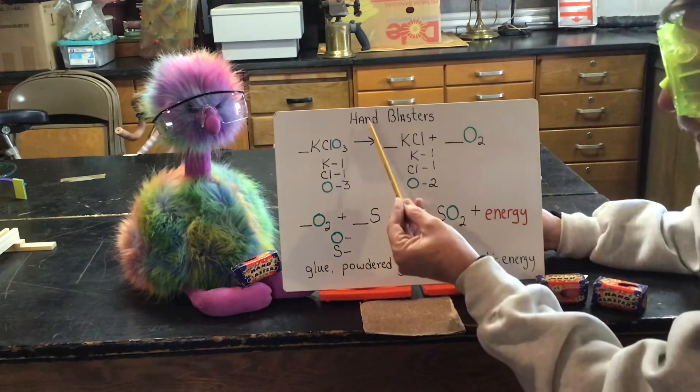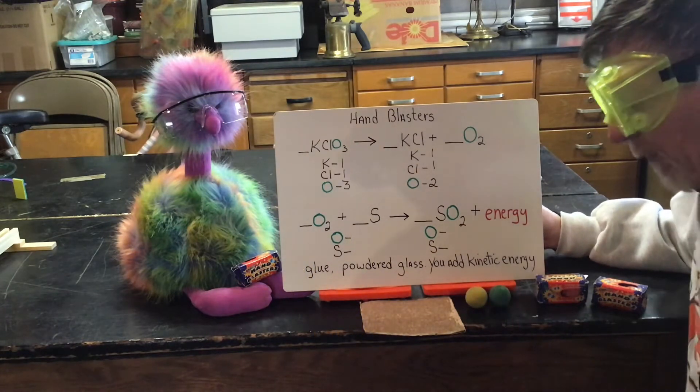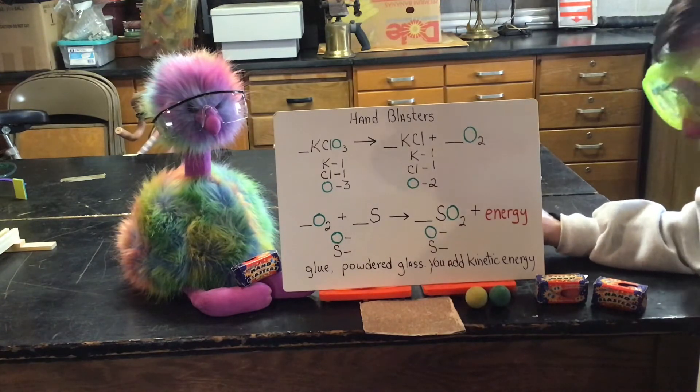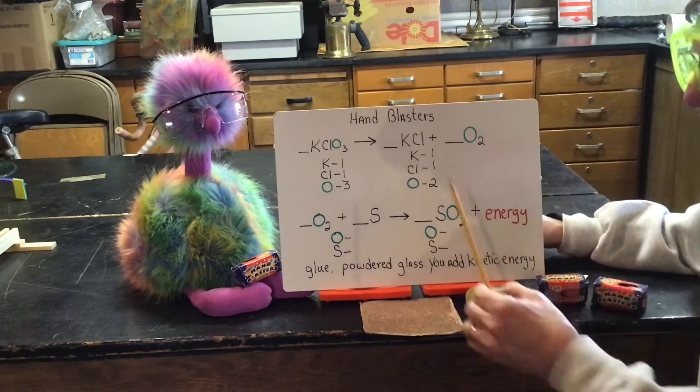And today, Bob and I are going to look at hand blasters. These are nice little toys that are given out. You buy them right around the 4th of July, things like that. And they're a lot of fun. They're not dangerous. They show a lot of good chemistry.